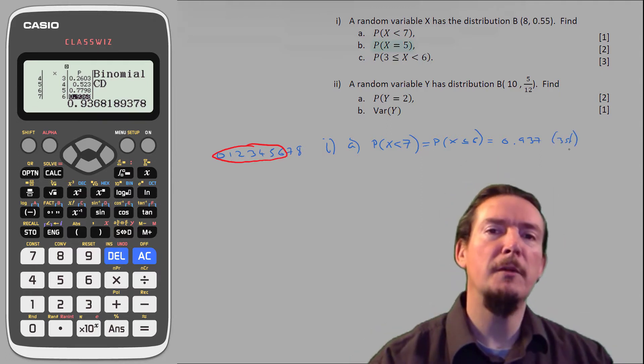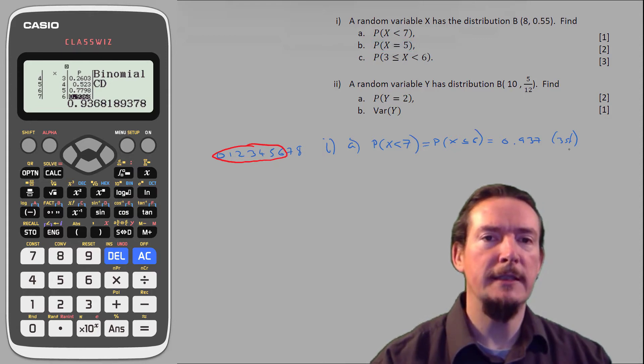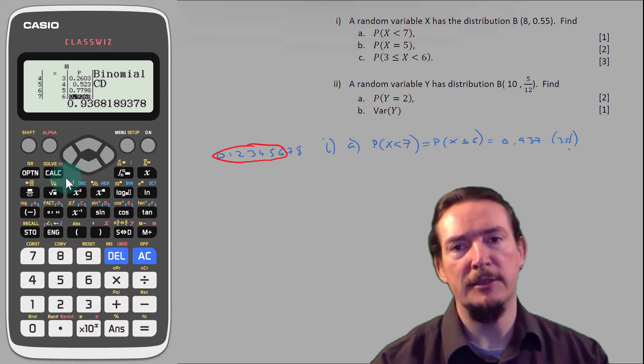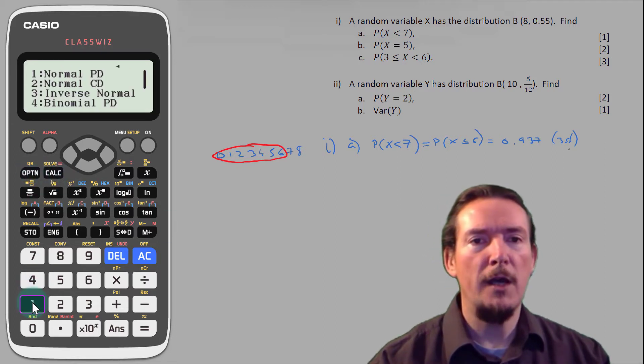For part b, we want the probability that x is equal to 5, so we need to switch from the cumulative probabilities to the single binomial probability distribution. Press Option, then 1, followed by 4, and then 1 again.